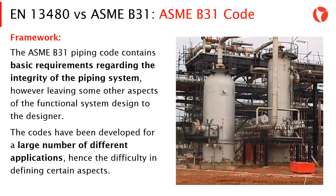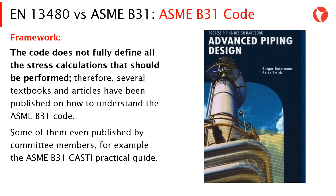The ASME B31 piping code contains basic requirements regarding the integrity of the piping system, however leaving some other aspects of functional system design to the designer. The codes have been developed for a large number of different applications, hence the difficulty in defining certain aspects. The code does not fully define all the stress calculations that should be performed, and therefore several textbooks and articles have been published on how to understand the ASME B31 code — some of them by committee members, such as the ASME B31 Casti Practical Guide.